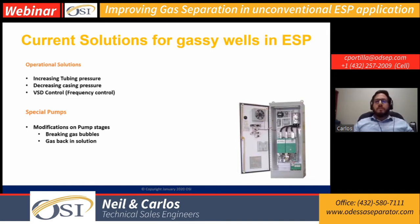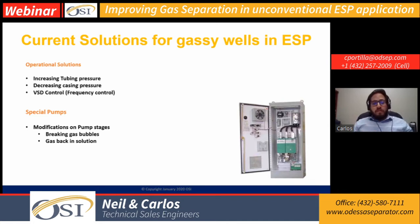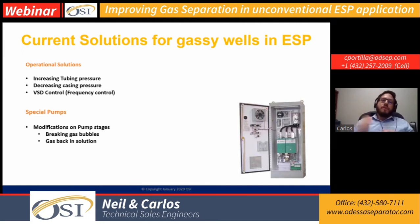Oil companies, service companies, and operators have come up with many solutions over years of research. Some solutions are operational, such as increasing tubing pressure by adding a back pressure system to put gas back into solution. Another solution is decreasing casing pressure — opening the casing and releasing pressure — so natural gas separation efficiency on the annular space will be higher because there's no back pressure on the casing.